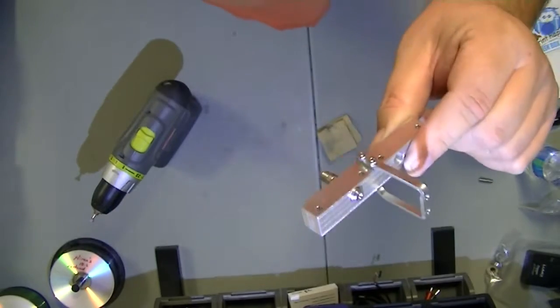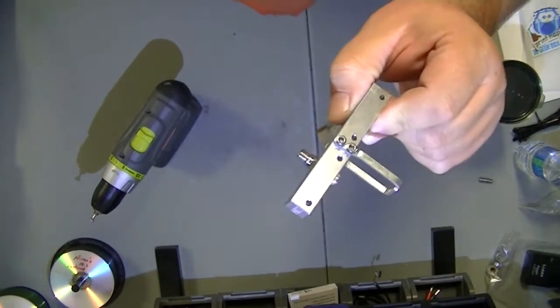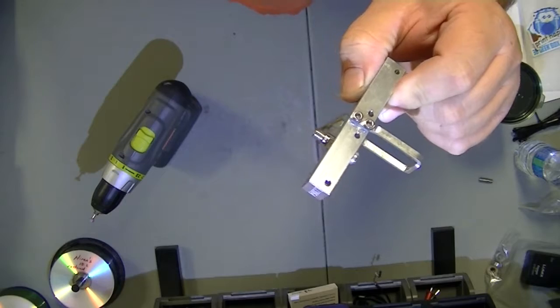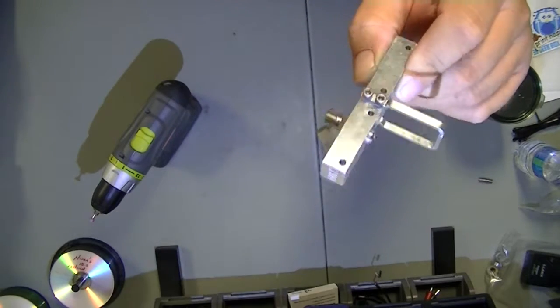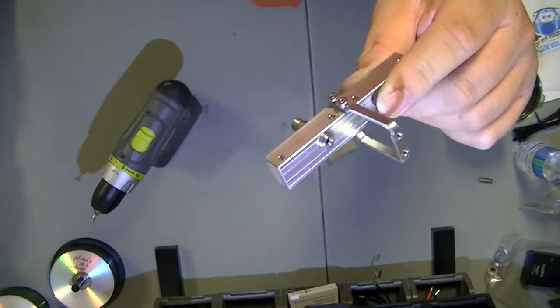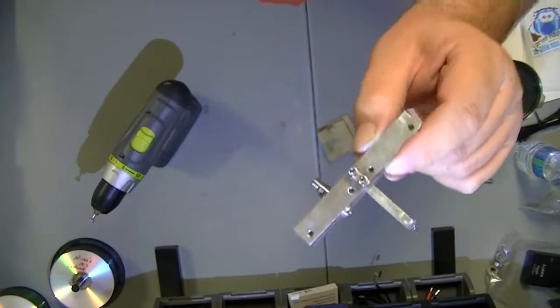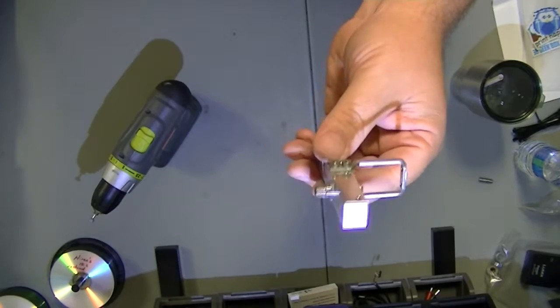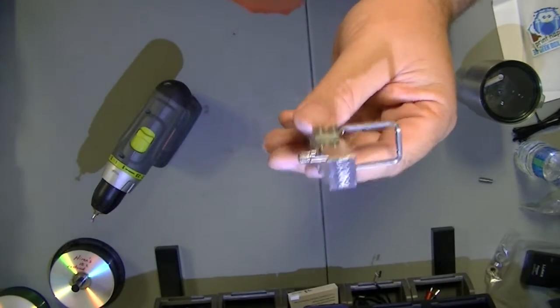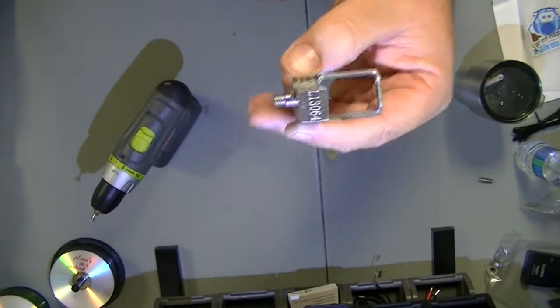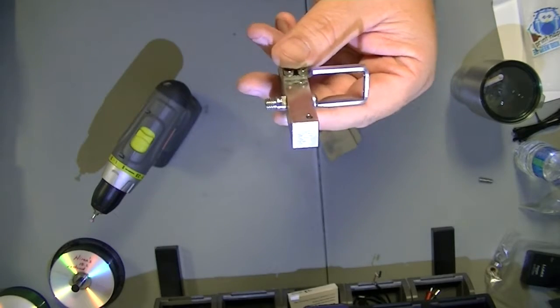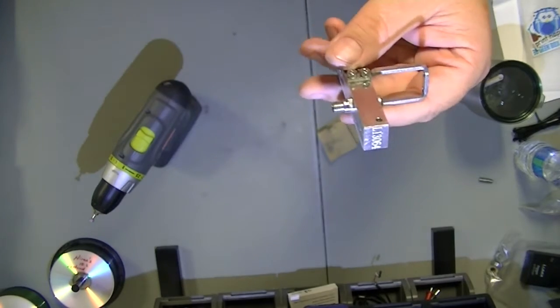Now to get to this aluminum block does require disassembling the hot end completely. The extruder, stepper motor, there's a lot of screws to remove. But there are several videos online showing how to put it back together. But if you make notes as you go along and take pictures.